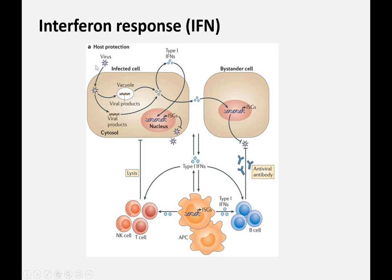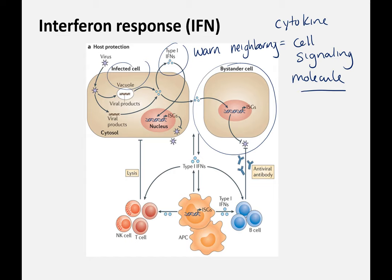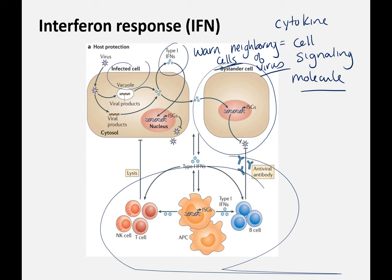Cytotoxic T cells can bind to antigens on the cell surface and kill infected cells. Both B cells and cytotoxic T cells are part of the memory, which is what we're trying to create with vaccines — and what your body naturally does in response to a viral, bacterial, protozoan, or fungal infection. Interferon is a cytokine, which just means a cell signaling molecule. Interferons are modulators of the immune system — they can be produced by an infected cell and go to neighboring cells to warn them that viruses are coming.